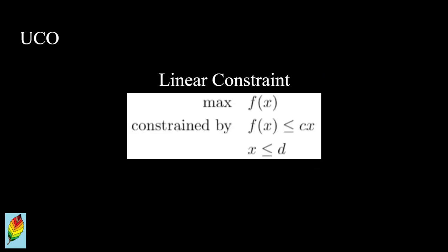Constraints can come in many ways, shapes, and forms. As seen previously, they can come in the form of a value or function limiting the possible solution set. This type of constraint is called a linear constraint.